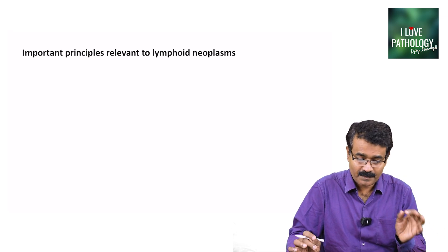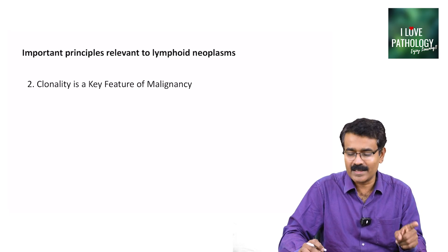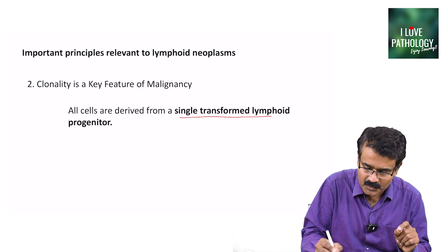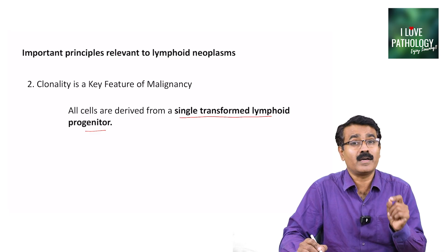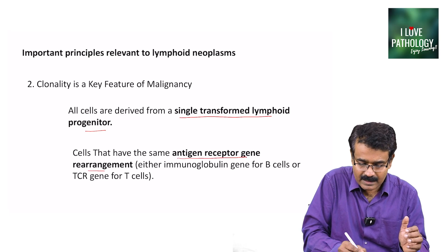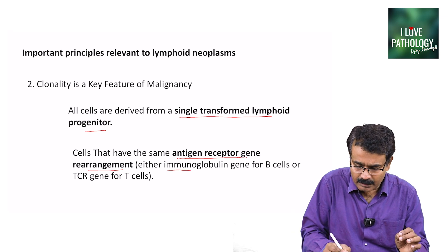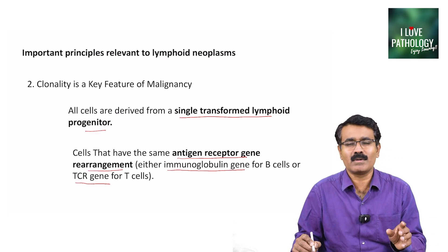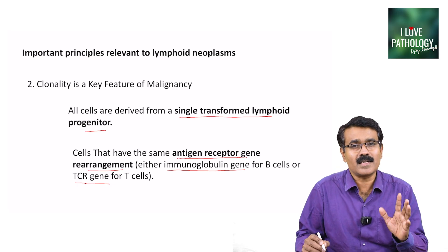The second important principle is clonality. Clonality is a feature of malignancy in lymphoid neoplasms because all cells are derived from a single transformed lymphoid progenitor — meaning they have the same antigen receptor gene rearrangement. This could be either the immunoglobulin gene for B cells or the T-cell receptor gene for T cells.